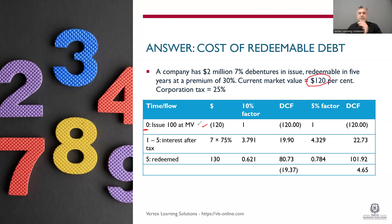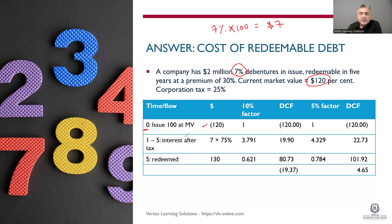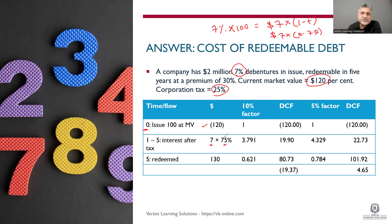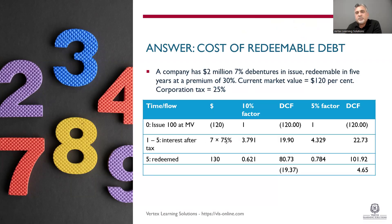From year one to year five, you pay interest at 7% of the face value of $100, which is $7. But $7 is your coupon payment and you get the tax benefit, so you multiply it by one minus T. Since the tax rate is 25%, that means $7 multiplied by 0.75 after tax. So: 7 × 75% = 7 × (1 − 0.25). This is your after-tax interest payment.